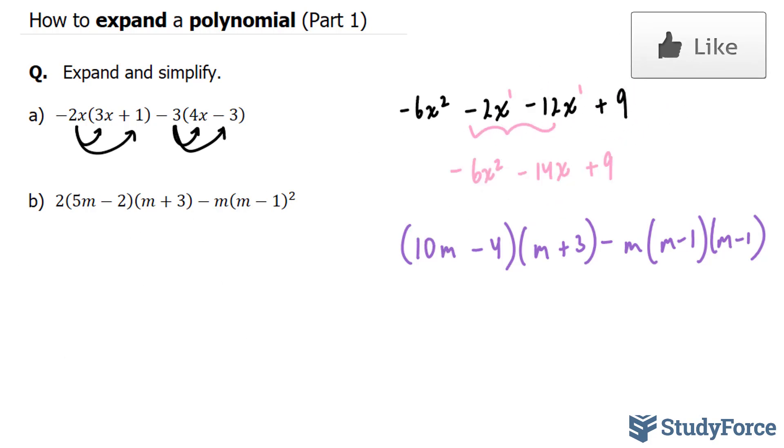The next thing that I will do is multiply these two binomials together. And I'll also multiply this m to this first set of brackets, similar to how I did these two. So let's go ahead and do that.